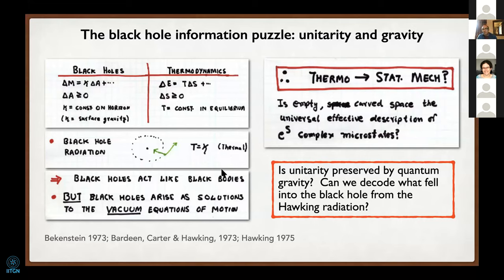A version of that question is: how is unitarity preserved by quantum gravity? You imagine stuff falls into the black hole—elephants, encyclopedias, whatever—and it Hawking radiates away. Then we ask: can we decode what fell into the black hole from the Hawking radiation? That's the problem of the black hole information puzzle and of unitarity in quantum gravity.